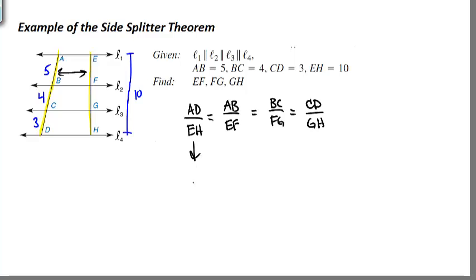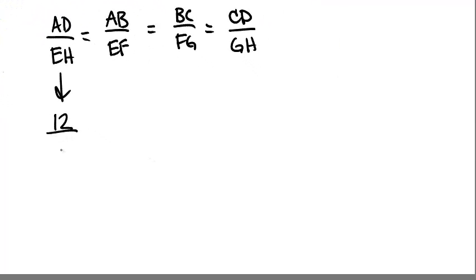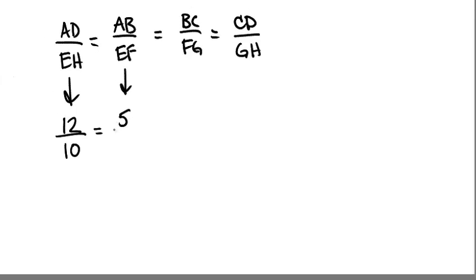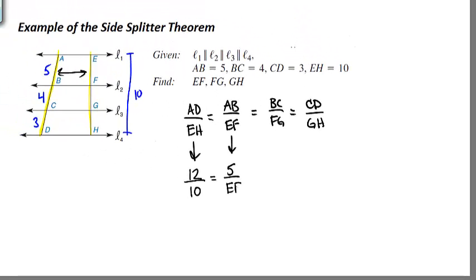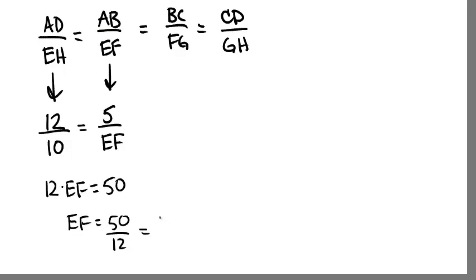So it should be the same ratio as AB to EF. It should be the same ratio as BC to FG. And it should be the same ratio of CD to GH. So when we look at the ratio of AD to EH, we can see that 5 plus 4 plus 3 is going to give us 12. So AD to EH is 12 to 10. So if we set that equal to the ratio of AB to EF, we know AB is 5. We can very easily solve for EF just by cross-multiplying. 12 times EF is going to equal 50. So EF is equal to 50 over 12, or when we reduce that down 25 over 6.